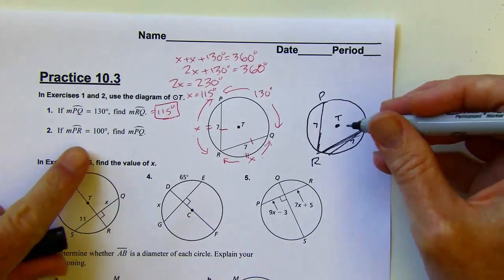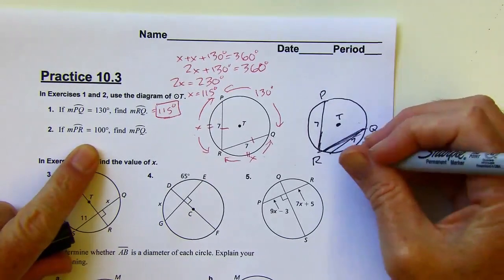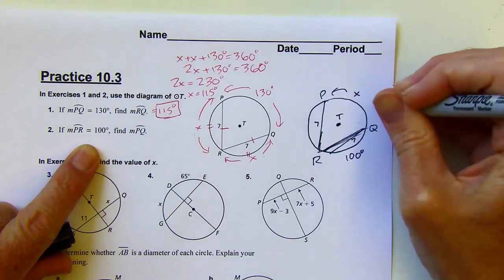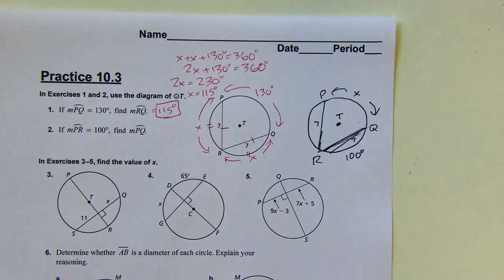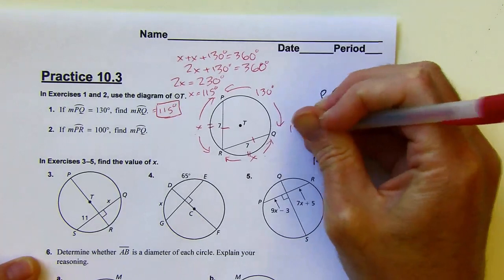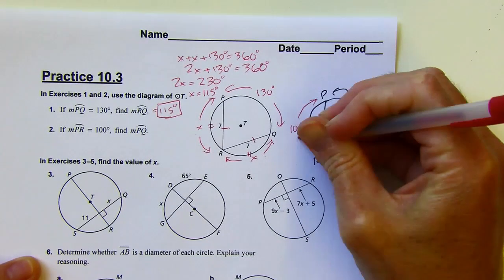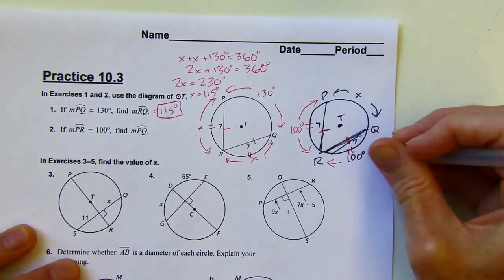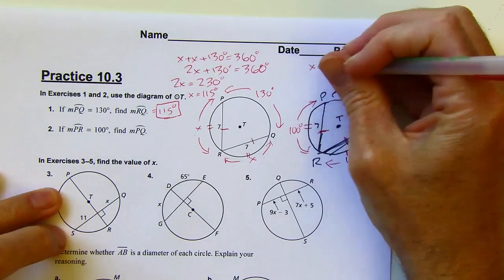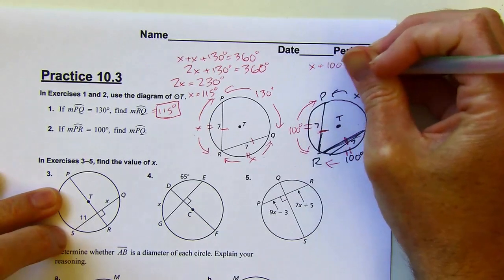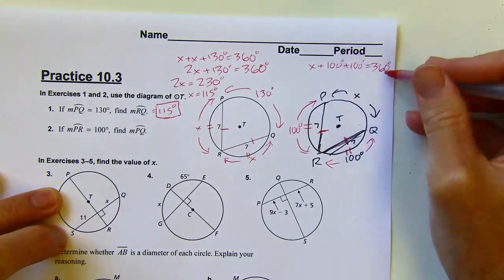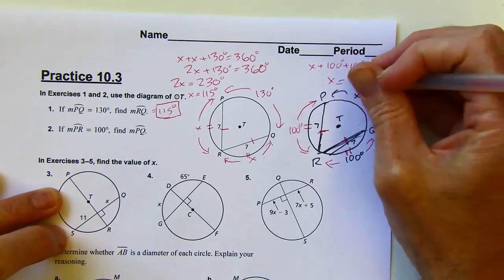And this one says if PR is 100 degrees, so if this one is 100 degrees down here, then find PQ. So I'm supposed to find that one here. I can use the same kind of strategy because I've got these chords that are congruent, so the related arcs would also be congruent. So now I know this is 100 degrees here, and now all three of those arcs around the outside would add up to 360. So X plus 100 plus 100 is going to equal 360. So I'm going to subtract 200 from both sides, and X is going to come out to 160.